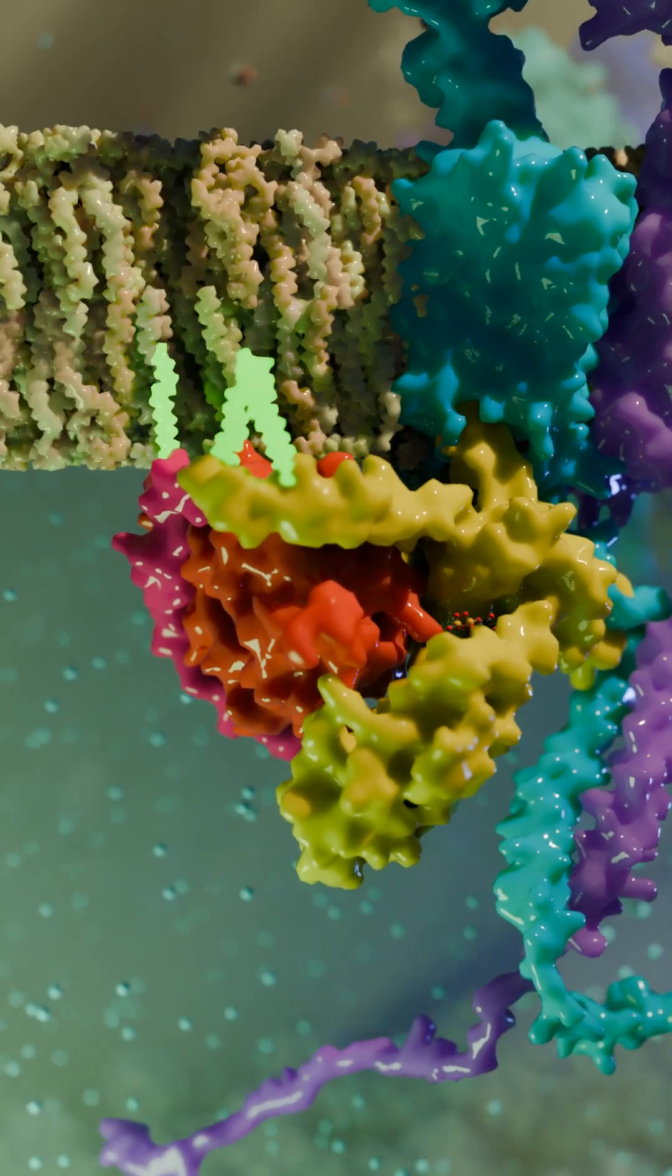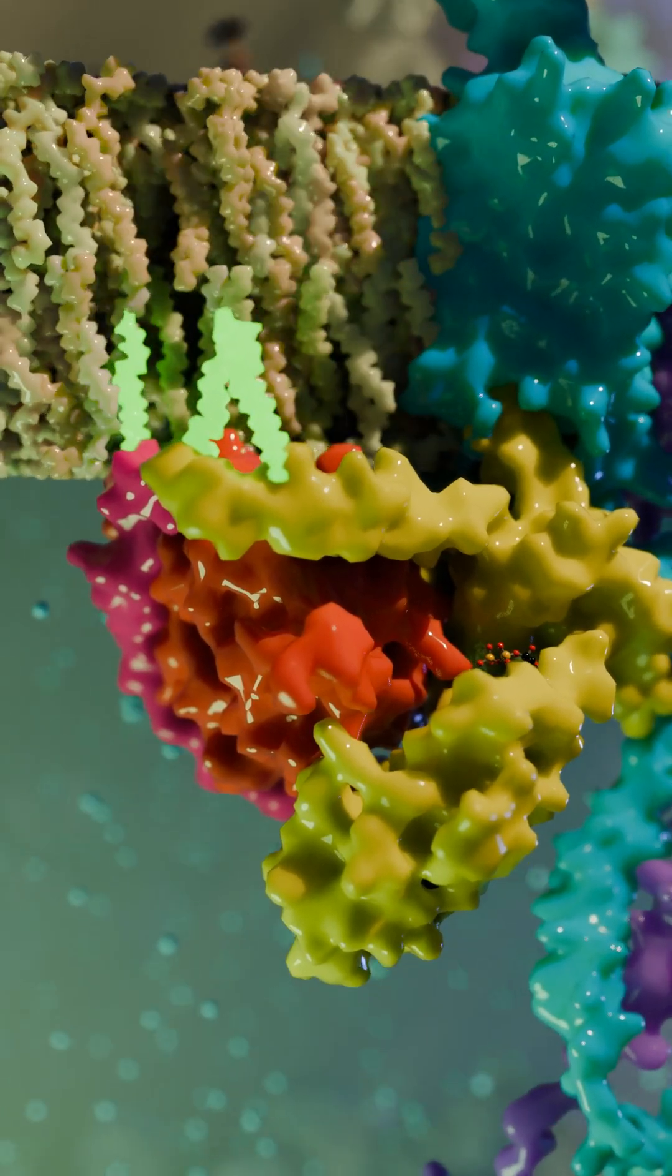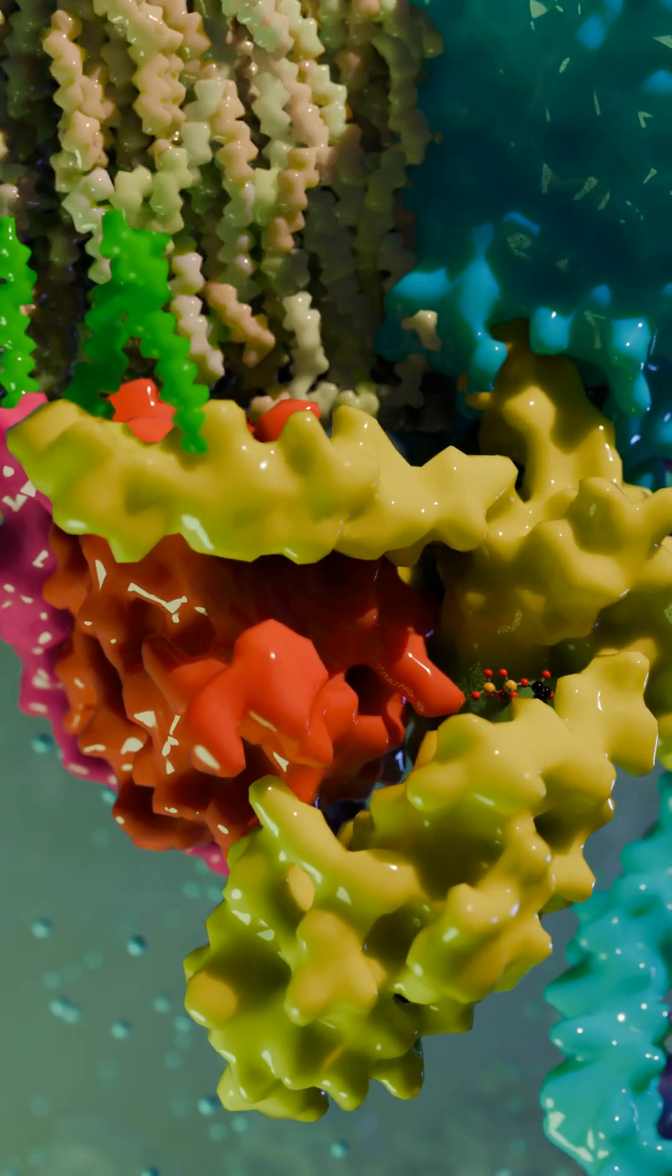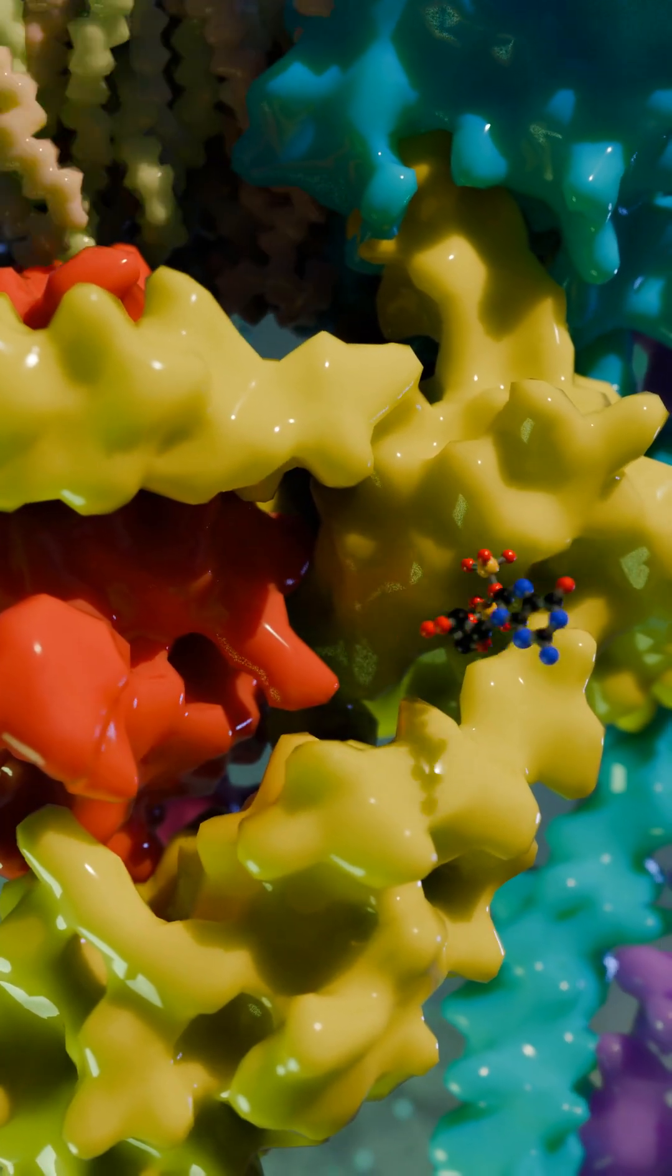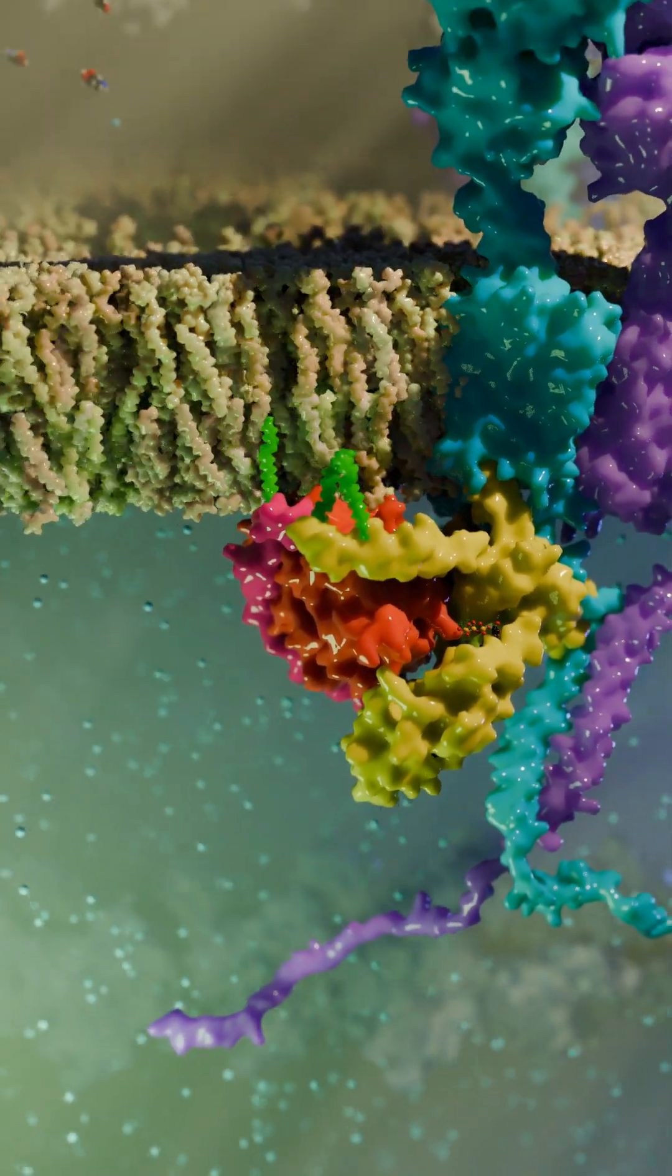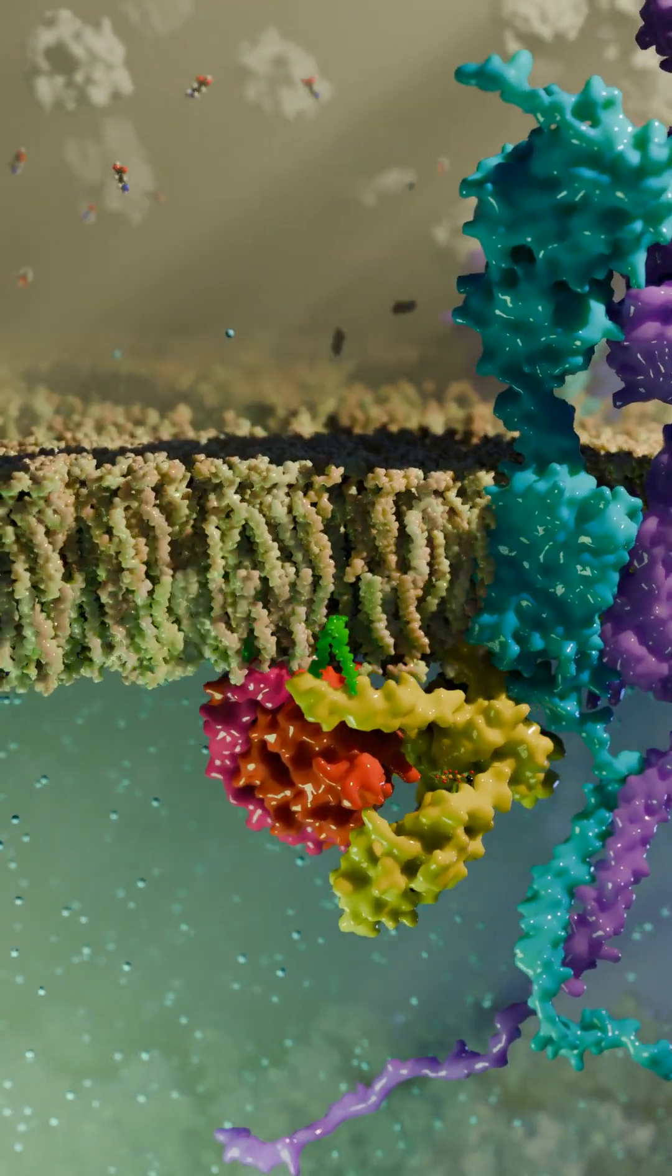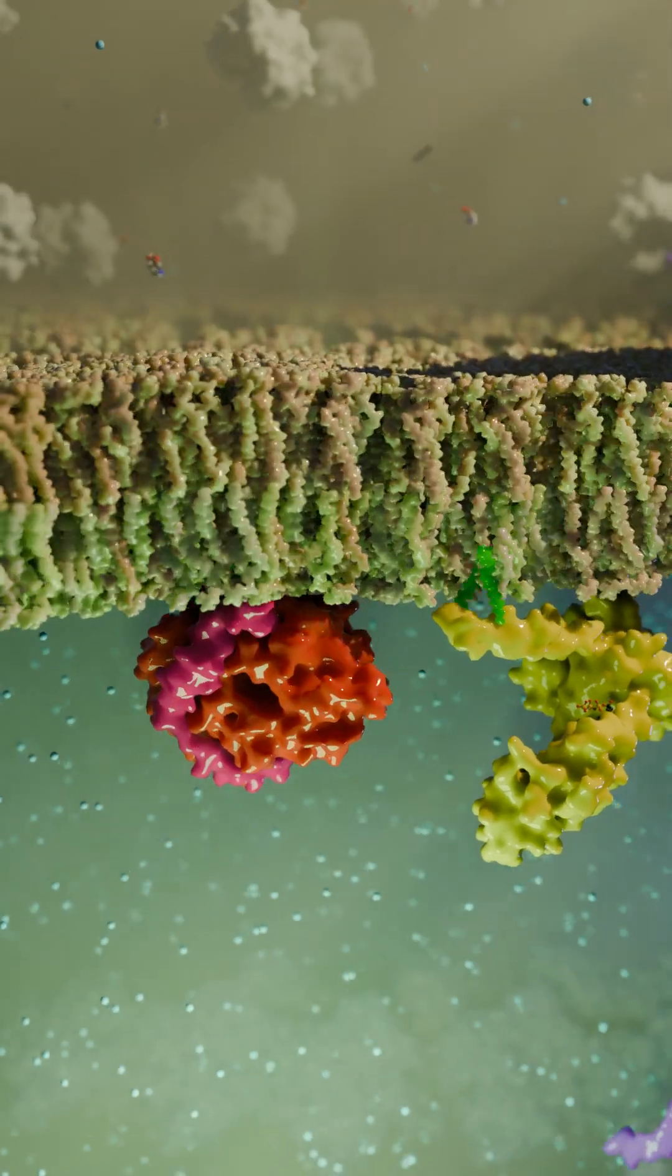Lipid modifications on the alpha and gamma subunits allow the proteins to be anchored to the cell membrane. When the G-protein binds to the receptor, GDP on G-alpha can be replaced with GTP. This activation causes the G-protein to leave the receptor, and G-alpha separates from G-beta and G-gamma.